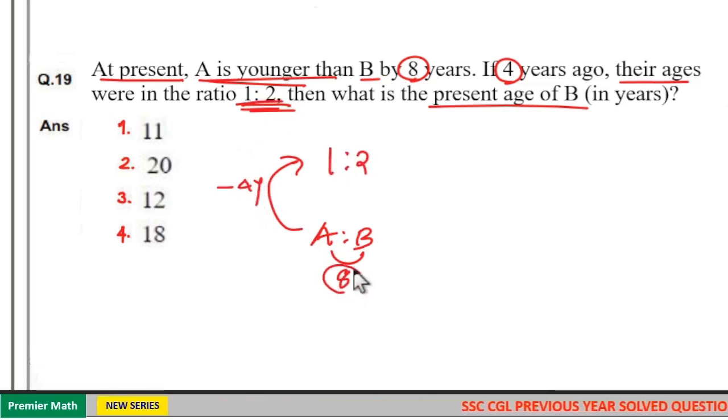Here age difference is 8 which is constant. That is, even before 4 years the difference between A and B was 8 years.